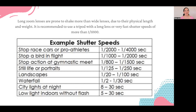If you're looking at things like still life and portraits, you can start to slow your shutter speed down a little bit — so around 1/125 to 1/250.